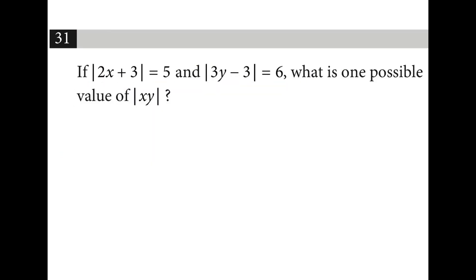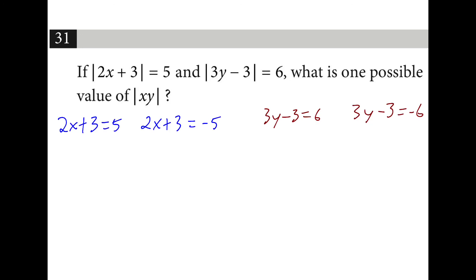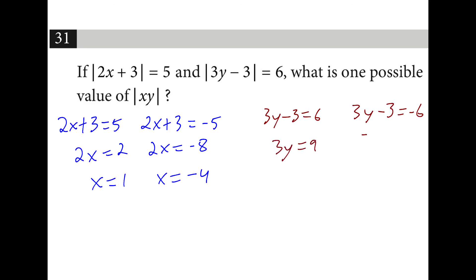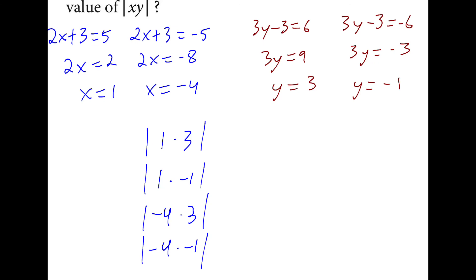I can solve both of these equations for their positive and negative solutions. On the left, I subtract 3 from both sides and then divide by 2. On the right, I add 3 to both sides and divide by 3. Plugging in the different values for x and y into the absolute value brackets, it's possible to get answers of 3, 1, 12, or 4. Any of these is correct.